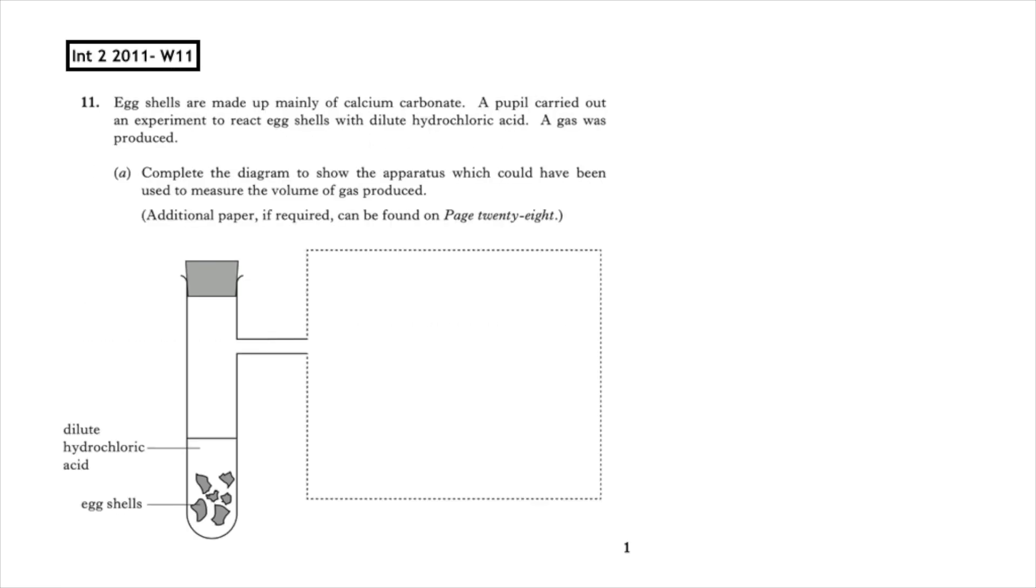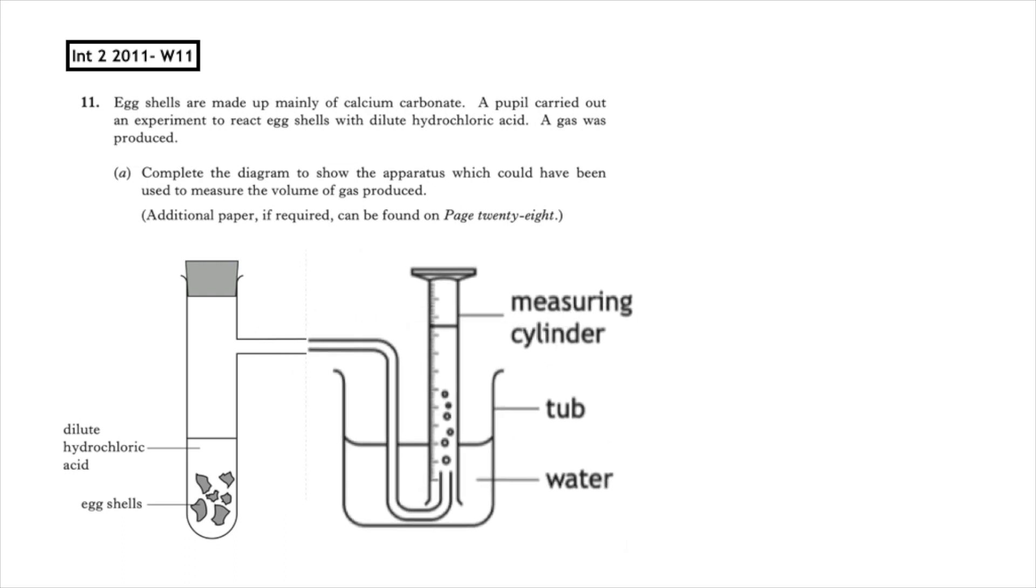This past paper question is from Intermediate 2, 2011 written question 11. Complete the diagram to show the apparatus which could have been used to measure the volume of gas being produced. You can either draw a gas syringe or you can use the displacement of water using an upturned measuring cylinder. It's not expected at this stage that you know anything about the solubility of the gas being produced, which is carbon dioxide, so either of these would be accepted at National 5.